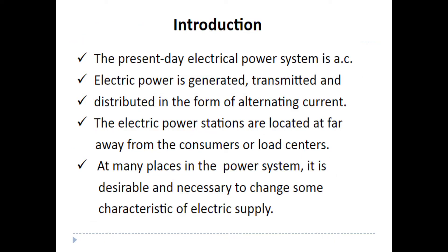Let's look at the introduction. The present day electrical power system is AC, that is alternating current. Electrical power is generated and distributed in the form of alternating current. Electrical power stations are located far away from the consumer or load centers. At many places in the power system, it is desirable and necessary to change some characteristics of electric supply.